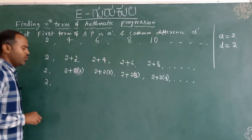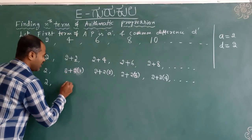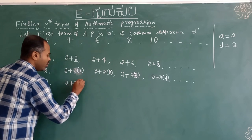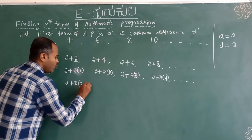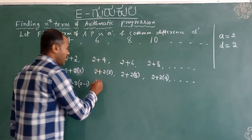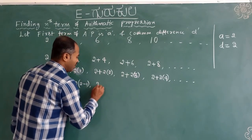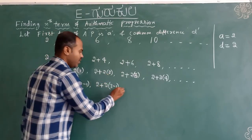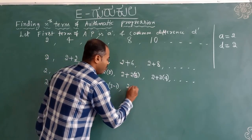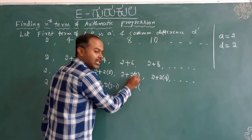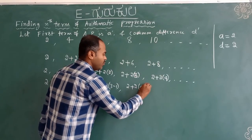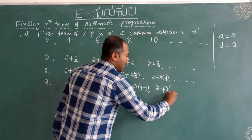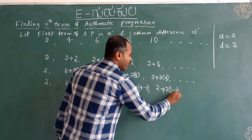In the next step, I am going to rewrite the multipliers. The second term: 2 plus 2 into (2 minus 1). The third term: 2 plus 2 into (3 minus 1). The fourth term: 2 plus 2 into (4 minus 1). The fifth term: 2 plus 2 into (5 minus 1), and so on.